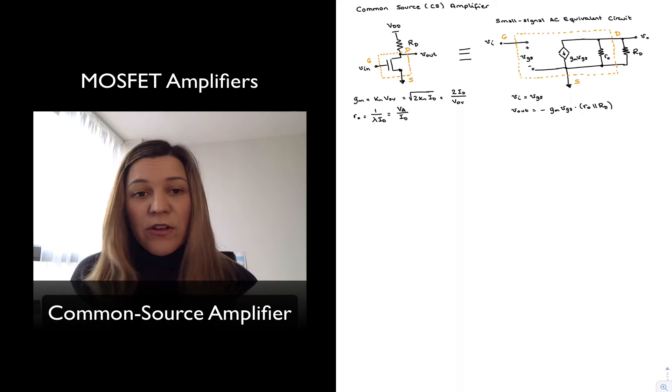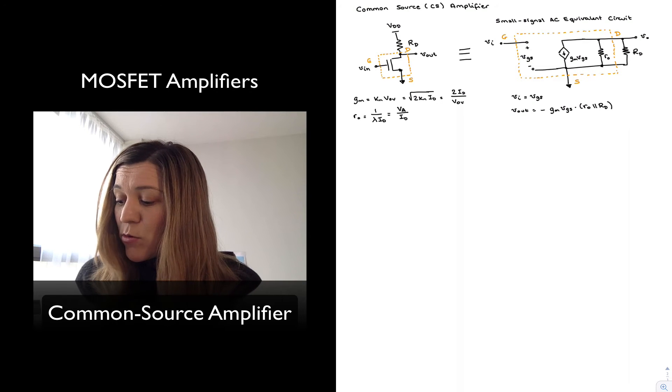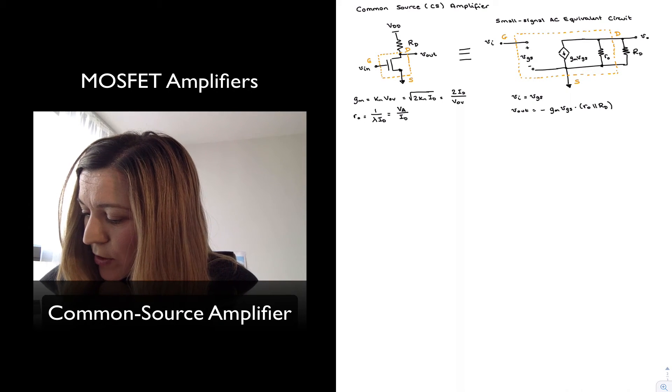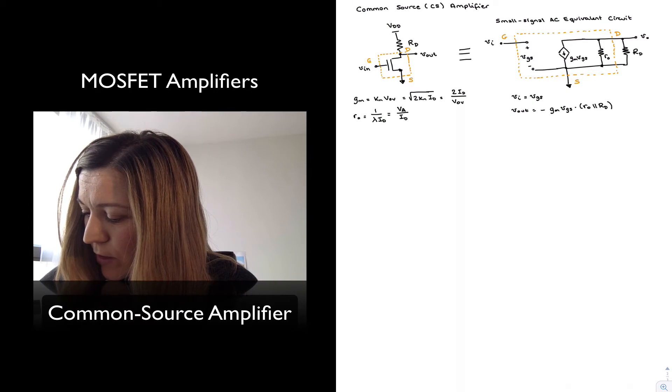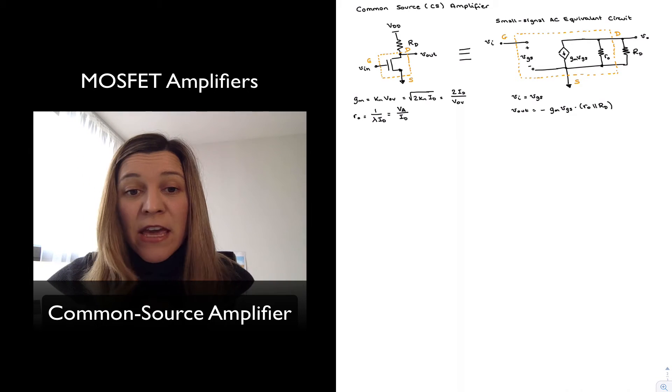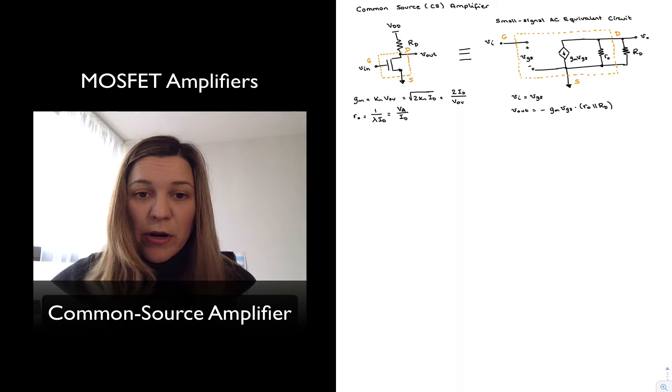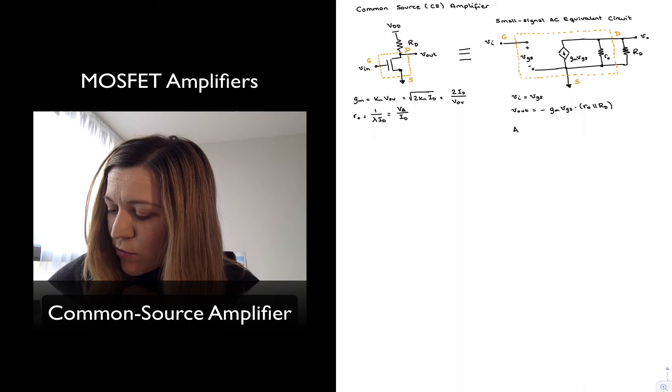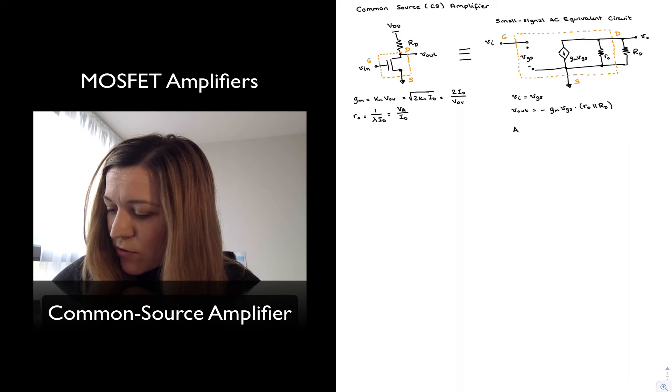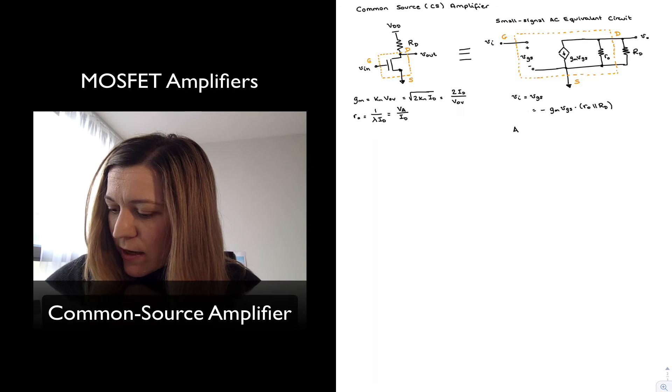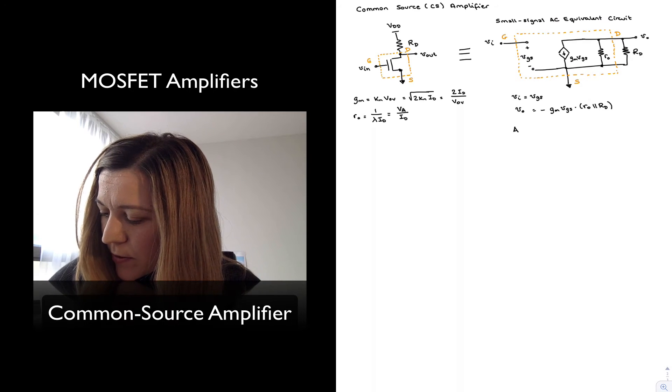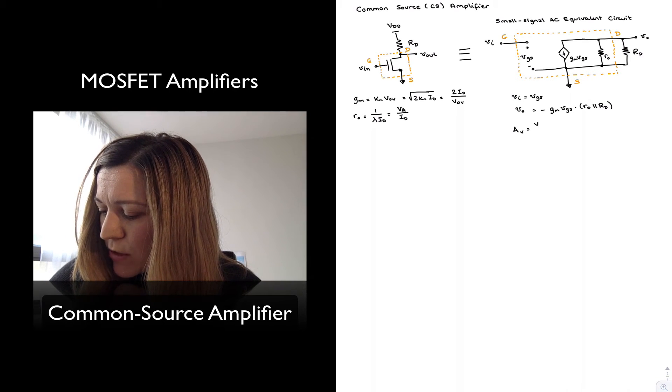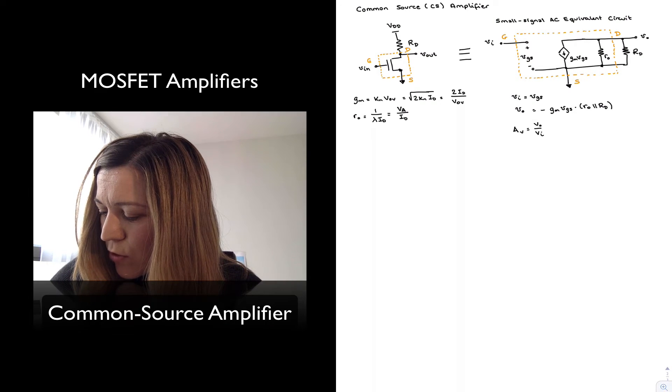Now, since I have seen my VGS is just simply equal to VIN, I can also express this as minus GM*VIN times r_o parallel with RD. So, if I put both of the expressions together, my expression for voltage gain, actually I should have called this VO because that's how I have it labeled in my circuit.